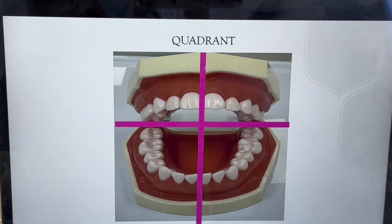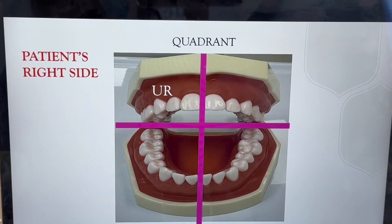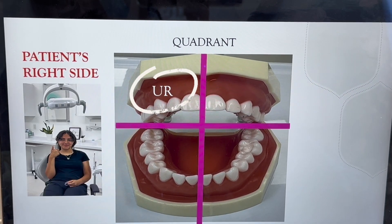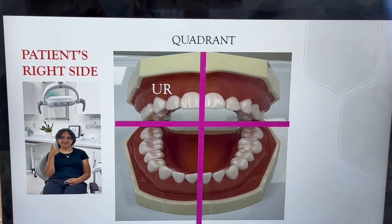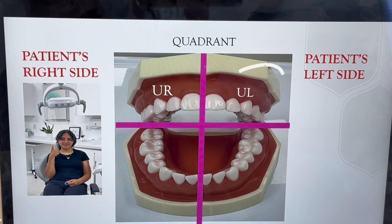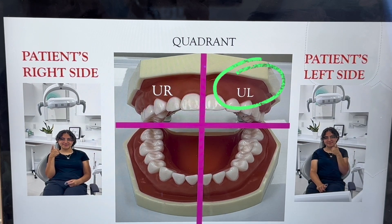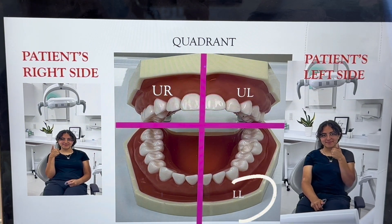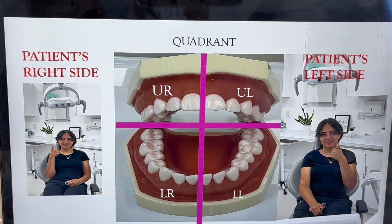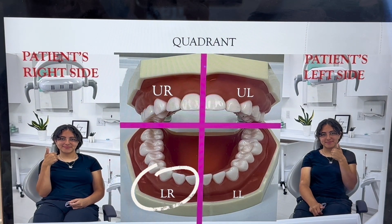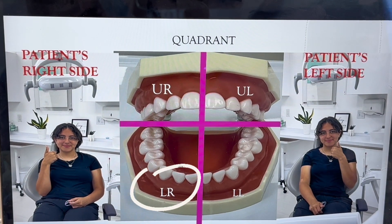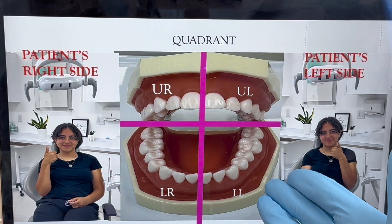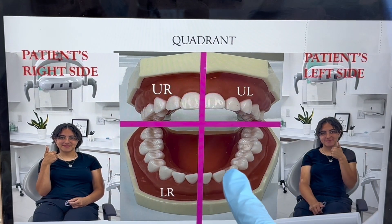This side we call upper right, because it's the patient's right side. This side over here we call upper left, because it's the patient's left side. This one is lower left — again, the patient's left. And this one is lower right — the patient's right side. Don't get confused: it's not our side. We're always talking about the patient's tooth.